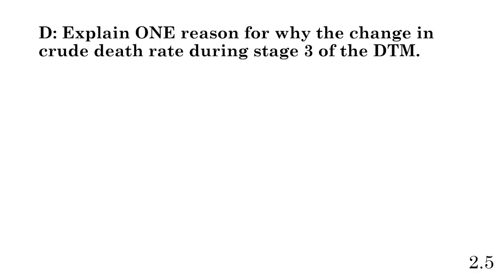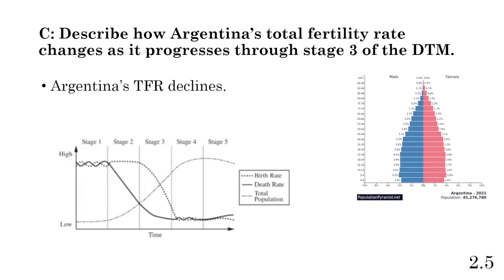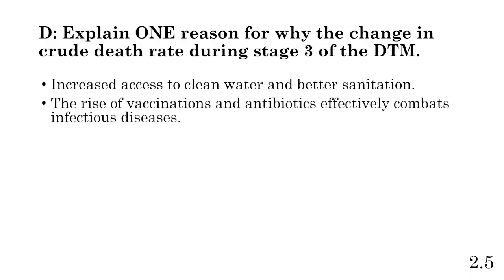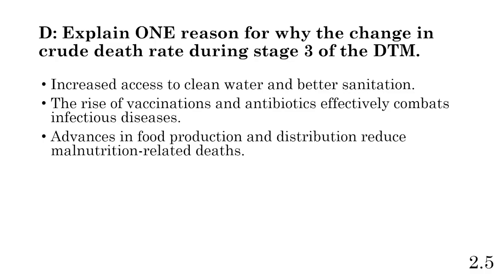Part D: explain one reason for the change in the crude death rate during Stage 3 of the DTM. Looking at the death rate — that straight black line — it continuously decreases. It doesn't decrease as much as in Stage 2, but further advancements in healthcare lead it to decline even more. We see increased access to clean water, better sanitation, vaccines and antibiotics that combat infectious diseases. A big factor from Stage 2 to Stage 3 is combating viral diseases, whereas Stage 1 to Stage 2 focuses more on bacterial diseases.